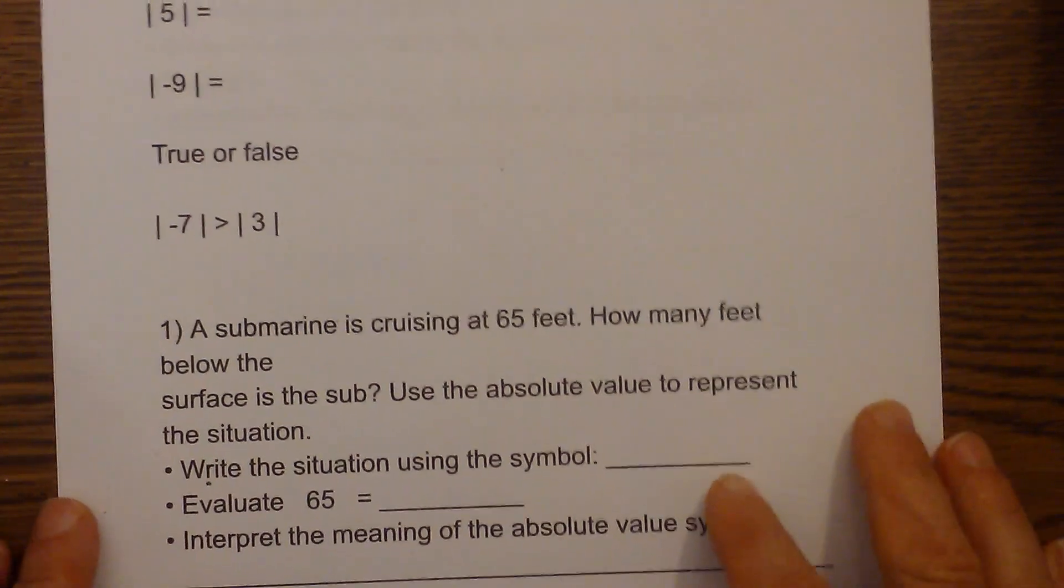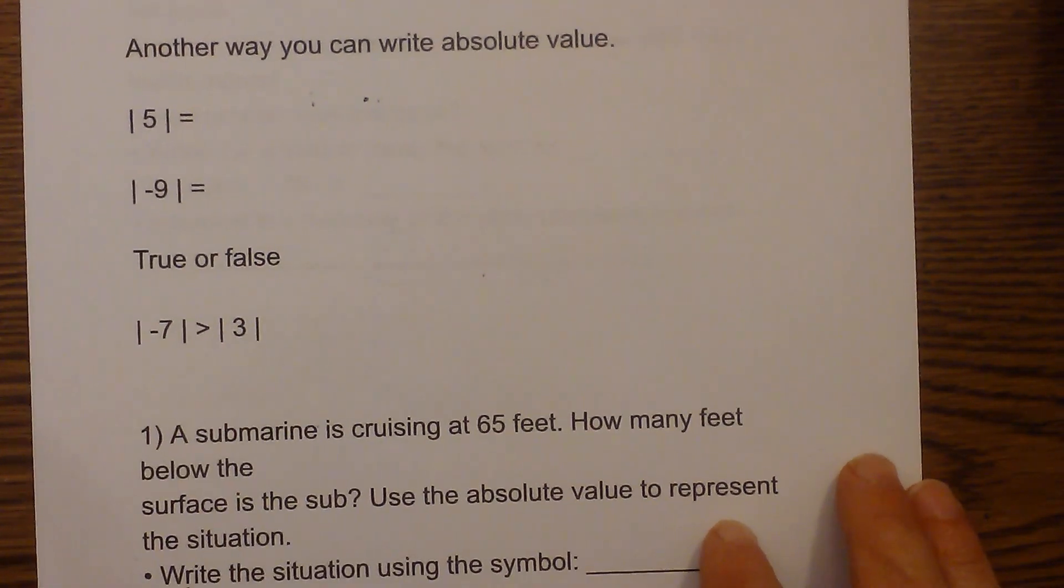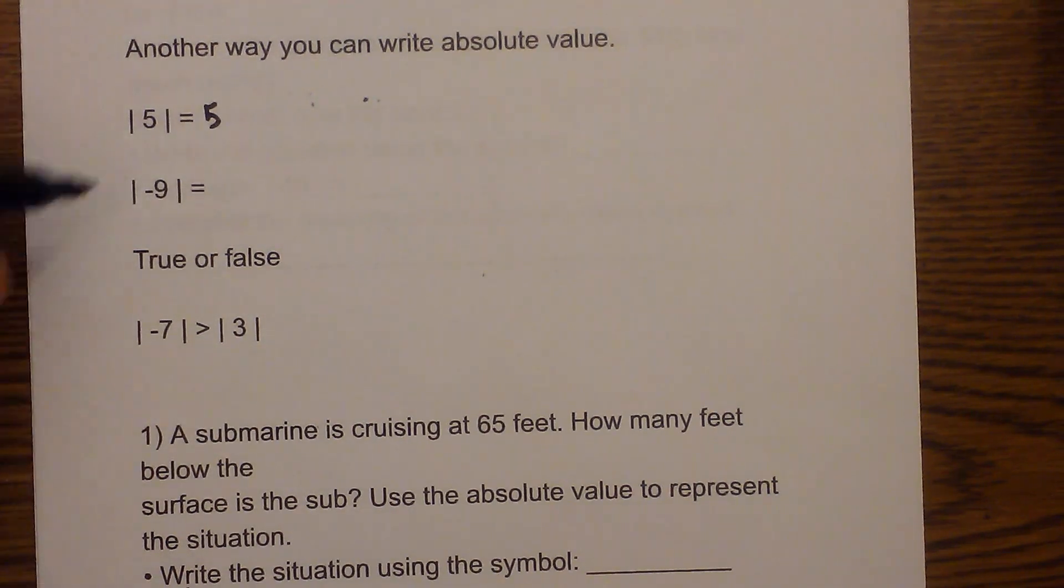Now let's look at another way to write this. Another way you can write absolute value is—you have the absolute value of 5, you can write it, it would equal 5. The absolute value of negative 9 would equal 9.